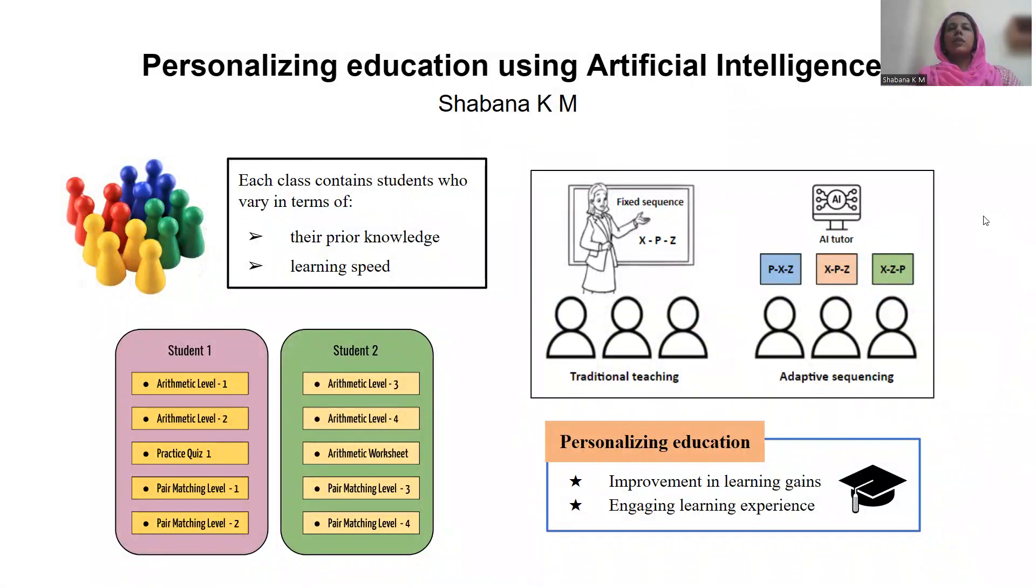In the traditional classroom as well as MOOC setting that all of us are familiar with, the same lessons in a fixed sequence are presented to all the students, irrespective of their prior knowledge or learning speed. This adversely affects the quality of education as the individual learning requirements of all students are not usually met under this scheme.